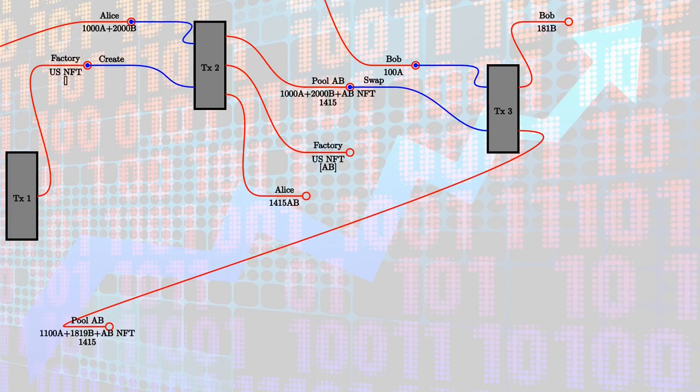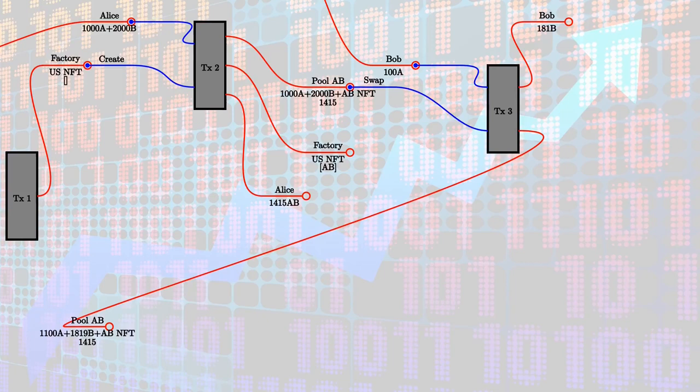Where does 181 come from? This is the ingenious price discovery in Uniswap: the product of the amounts of the two tokens must never decrease. Initially we have 1000 A and 2000 B, product = 2 million. After the swap, 1100 × 1819 is larger than 2 million. If you swap small amounts, you pay roughly the ratio of A's and B's in the pool — originally 1 to 2 — so Bob should roughly get 200 B's.